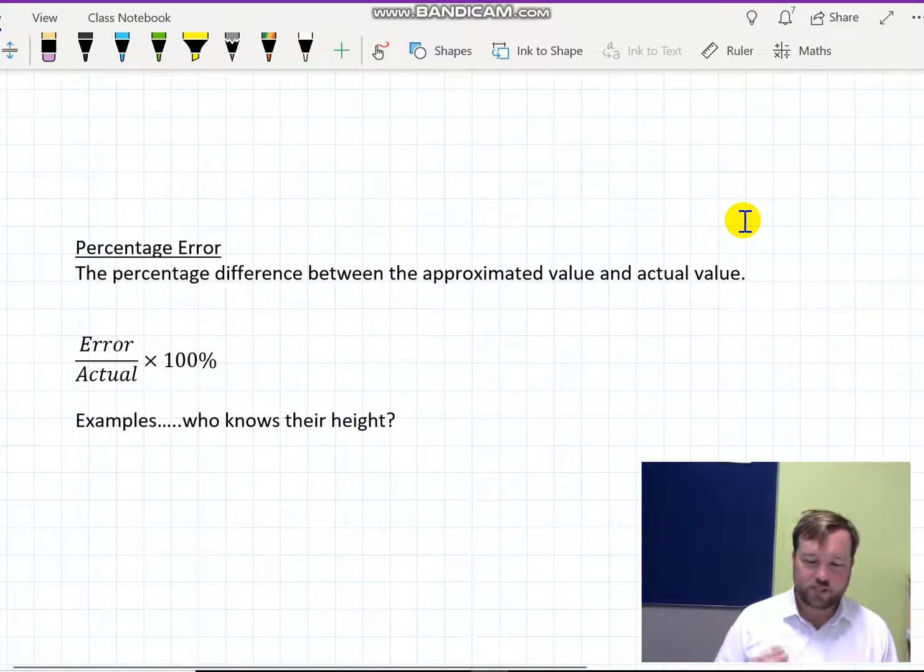If I was measuring the distance from here to Stenels Beach, and I was 3 centimeters out, I've done a pretty good job. If I was measuring the length of my little finger, and I'm out by 3 centimeters, I've done an awful job. So it's much more common to talk about percentage error, as in how far off they were relative to what they were measuring.